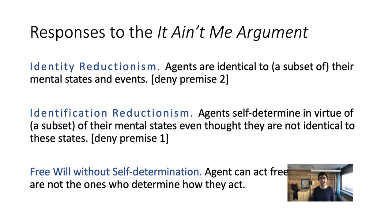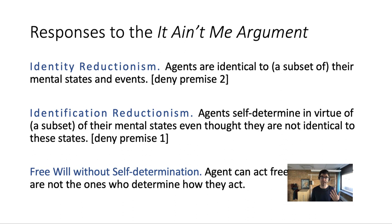Franklin points out there are three responses to the it-ain't-me argument. The first, identity reductionism, simply denies premise two by saying the agent is actually identical to a subset of the agent's mental states. The second, identification reductionism, says it's not true that for the agent to determine herself she needs to be identical to her mental states — she just needs to identify with them in an important way. The third response acknowledges the conclusion but argues you can still have free will without the power to self-determine.